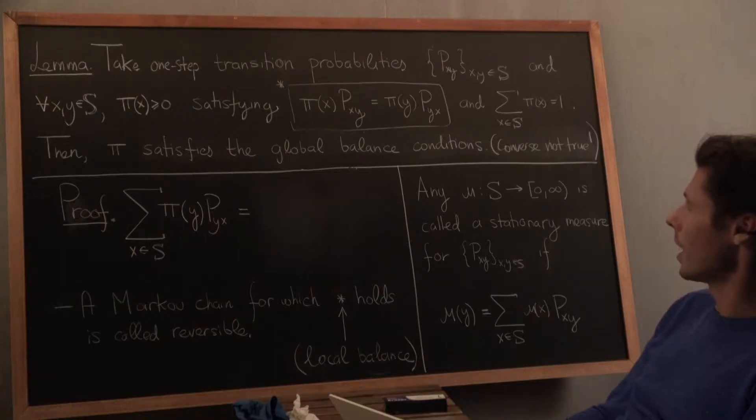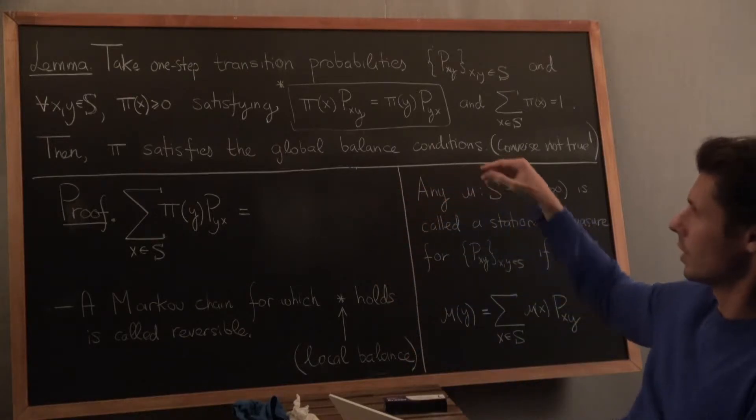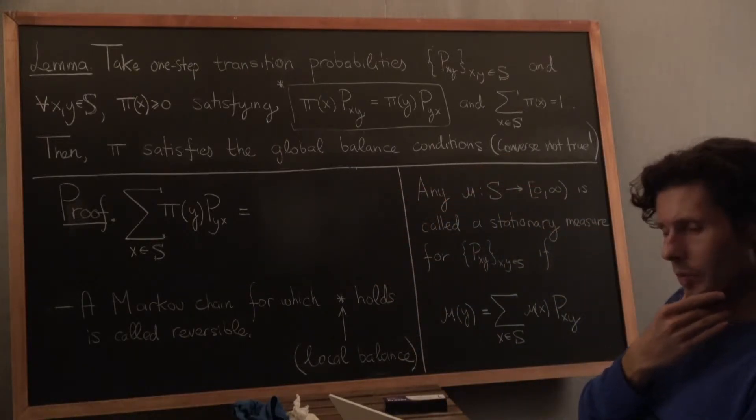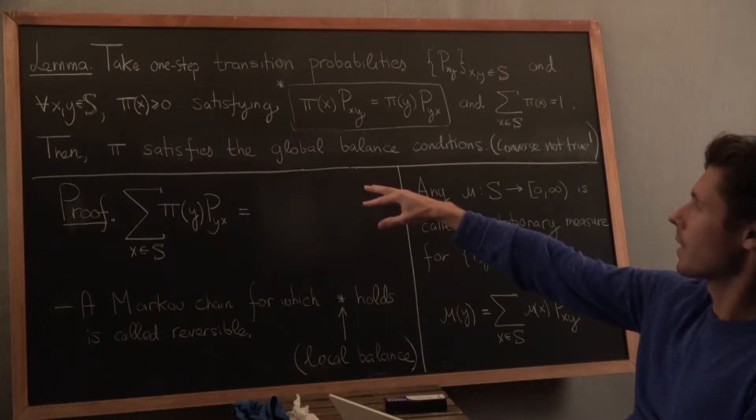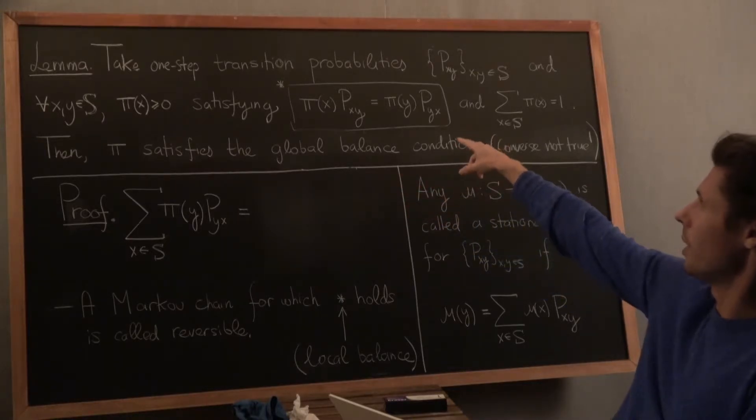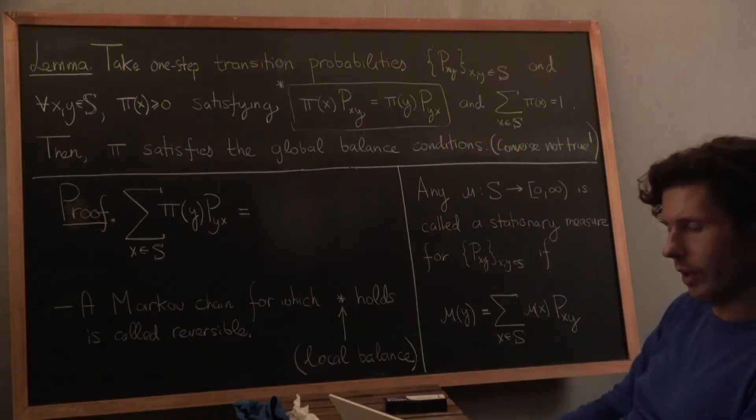But for now, we want to understand the relationship between the two. And in the third line, that's what's being established. It essentially says that local balance implies global balance, but not conversely. Pi satisfying star means pi satisfies the global balance conditions. But the other way around will not work.